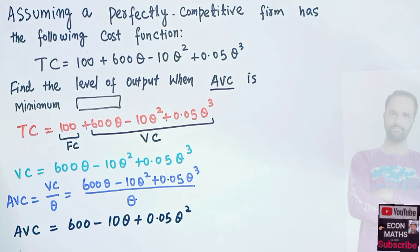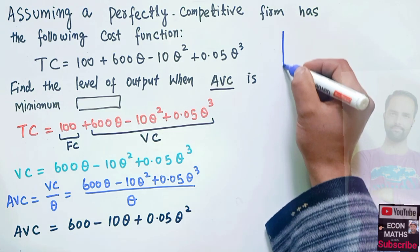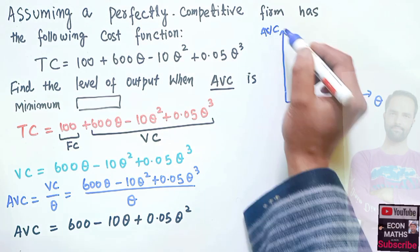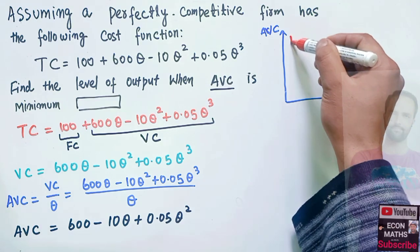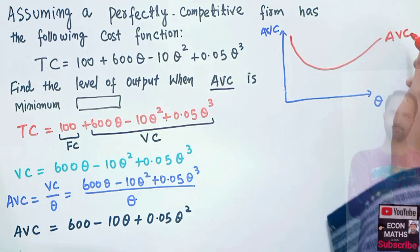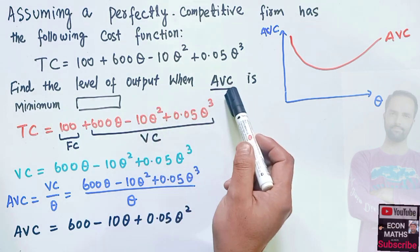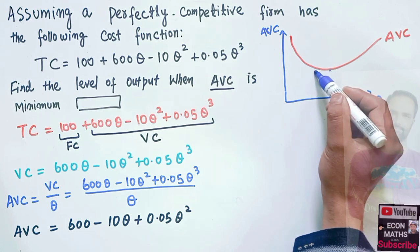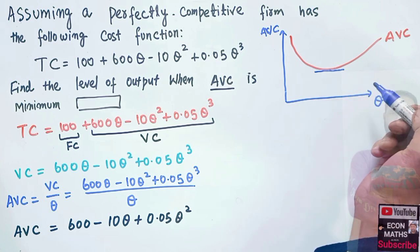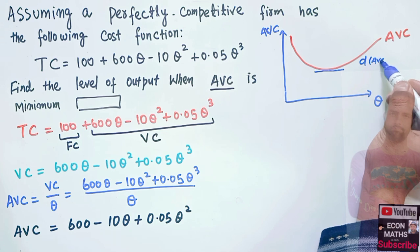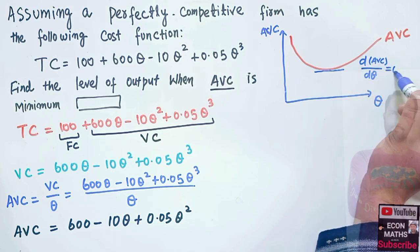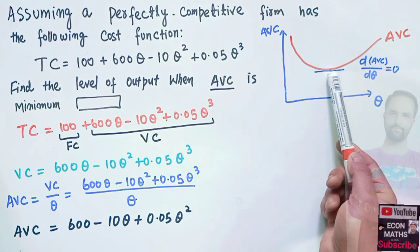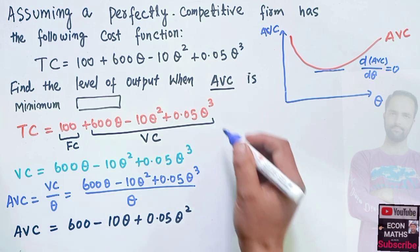Graphically, we have output on the horizontal axis and AVC on the vertical axis. The AVC curve is U-shaped. We need to find the level of output when AVC is minimum — that is, the point where the slope of the average variable cost equals zero, i.e., d(AVC)/dq = 0.